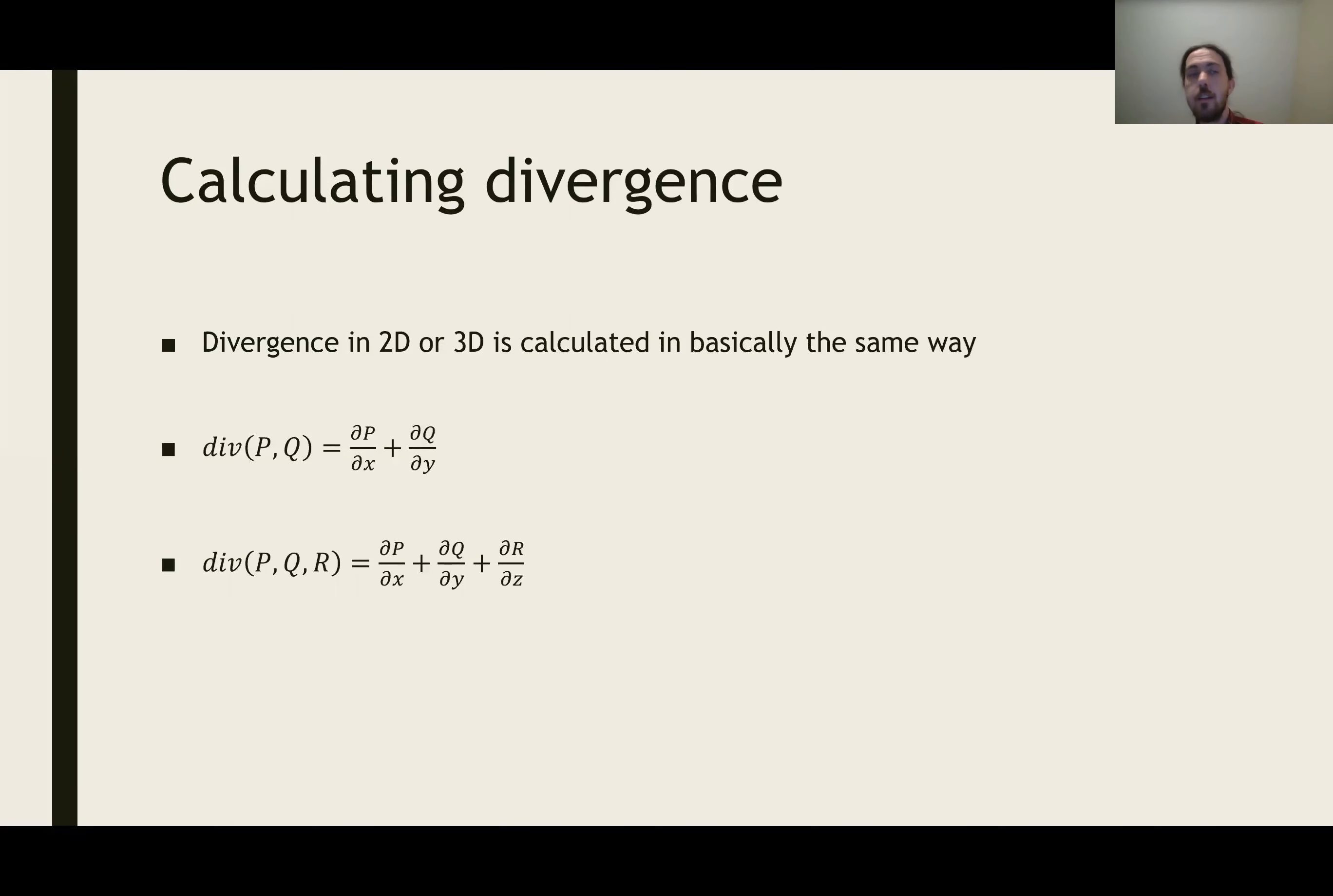To calculate it, there's a particular formula, and the formula is basically the same whether we're doing it in 2D or 3D. If we've got a vector field, we add up the partial derivatives, taking the x partial derivative of the x component, the y partial derivative of the y component, and the z partial derivative of the z component, and add all those up.